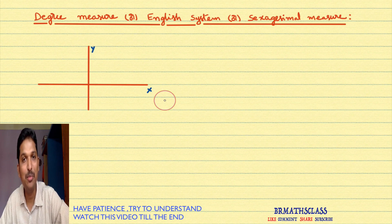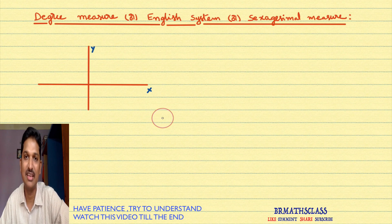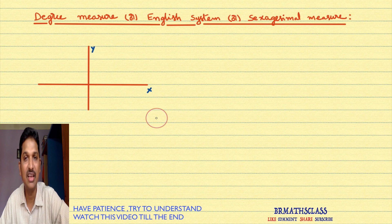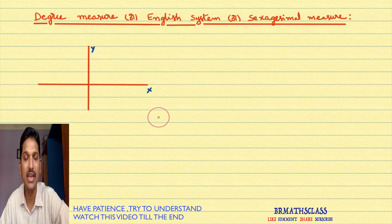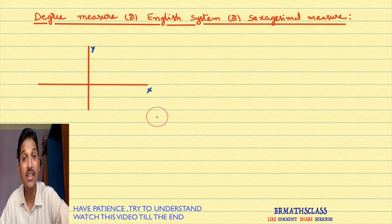Hi friends, I am Balaji Rao. Welcome to BRMAX class. This is the second class in Trigonometry. In the first class, we learned what is an angle, what is the vertex of an angle, what is a positive angle, and what is a negative angle. In this class, we will learn measures of an angle.